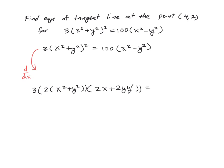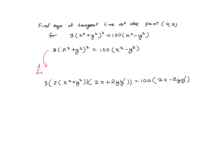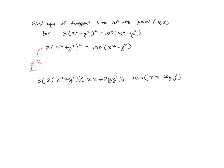On the other side, the multiplied 100 is a constant, we carry it along. The derivative is going to be 2x minus 2y y prime. So when we multiply all this out, we are going to have 6 times (x² + y²) times the quantity (2x + 2y y prime) equals 100 times (2x - 2y y prime).